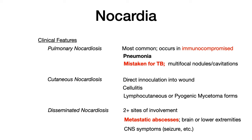Keep CNS symptoms in the back of your mind. You can see CNS abscesses or ring-enhancing lesions, and you also want to watch for other CNS symptoms secondary to the brain mass — things like seizures.